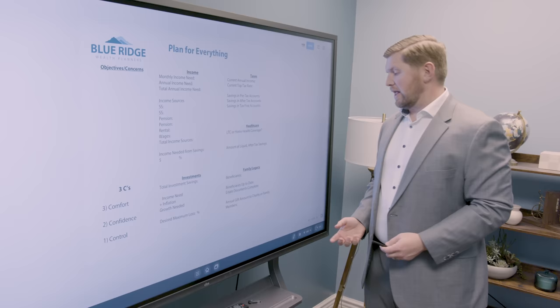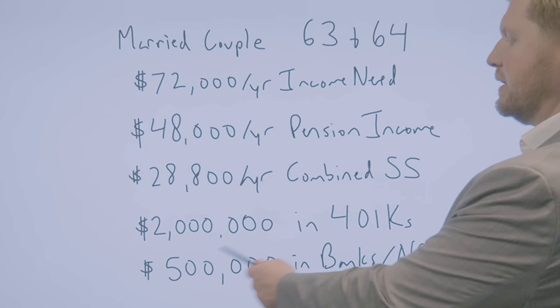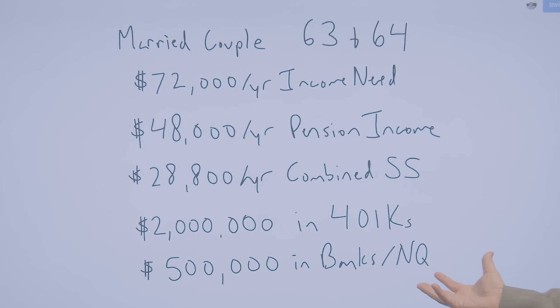And so again, as we start to add a little bit more meat onto the bone here for this situation, we've got a married couple, age 63 and 64, $72,000 or $6,000 a month is their income need. And lucky for them, between the pension income and their combined social securities, they have more than their income need provided on an annual basis. And these are sources that are not going away anytime soon. So as we look at this, this makes it to where they really don't need any of the money that's inside of this 401k or even the banks other than maybe emergency pools. But if you're going to pick one of these two, it'd be much better to take from this guy than this one.